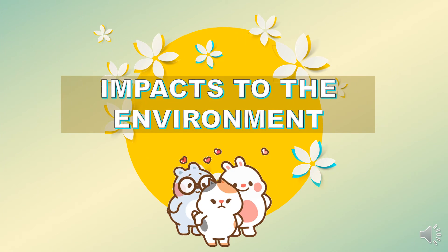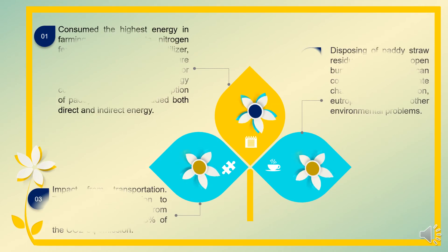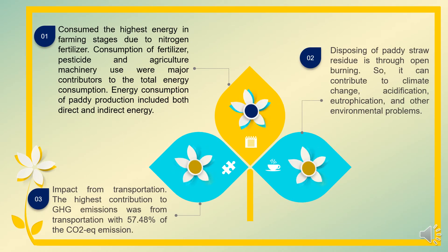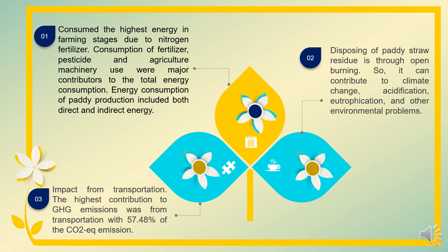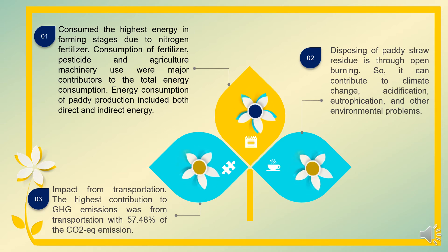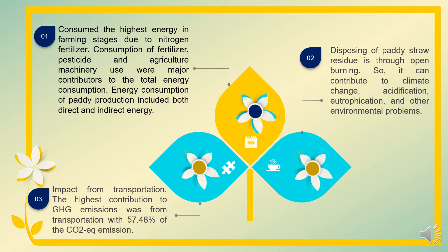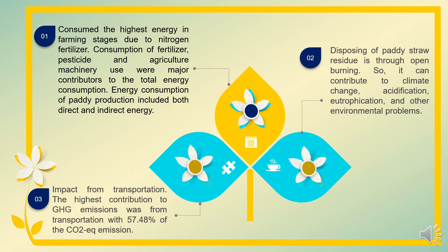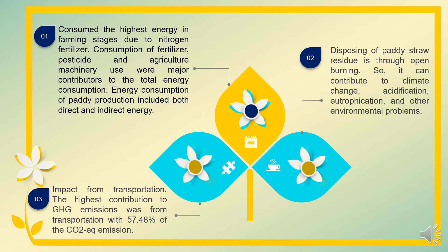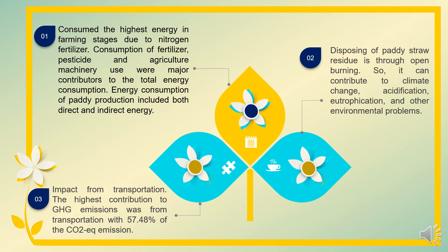Next, the impacts of the product on the environment. There are some impacts to the environment. Firstly, rice consumes the highest energy in farming stages due to nitrogen fertilizer. Consumption of fertilizer, pesticide, and agricultural machinery use are major contributors to total energy consumption, including both direct and indirect energy. Secondly, disposing of paddy straw residue via open burning can contribute to climate change, acidification, eutrophication, and other environmental problems.